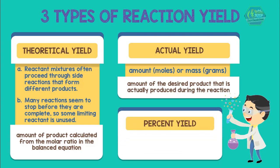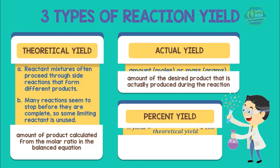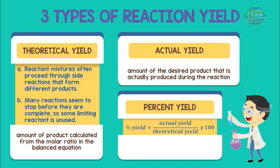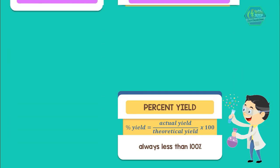The percent yield is the actual yield expressed as a percentage of the theoretical yield. By definition, the actual yield is less than the theoretical yield, so percent yield is always less than 100 percent.